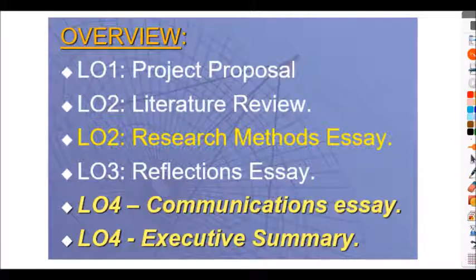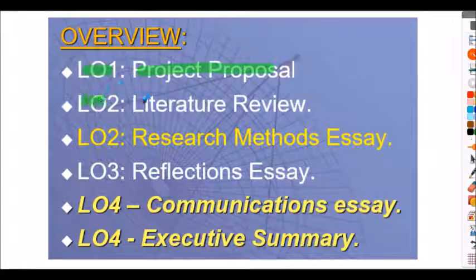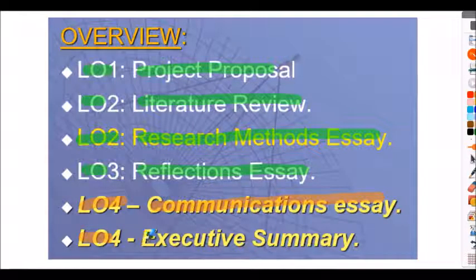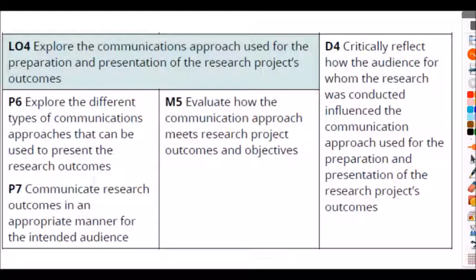This is an overview of everything we've done so far. You started with Learning Outcome One — the project proposal — then Learning Outcome Two was the literature review and research methods essay, and Learning Outcome Three was the reflections essay. Now we're into Learning Outcome Four. There are two parts: the communications essay and the presentation. The actual criteria show P6 and P7 for Pass, plus merit and distinction grades. My main emphasis is that everybody gets through the Pass grades first, because time is not on our side.